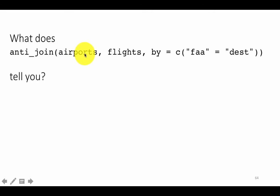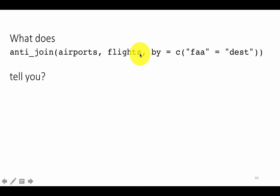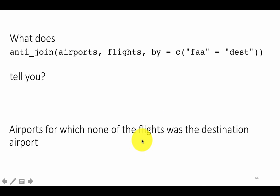How about the other way: anti_join(airports, flights, by = c(faa = 'dest'))? By the same argument, this tells us which airports were not destinations in the flights table — airports that exist in the airports table but no flights were going to those airports. So the earlier one found flights whose destinations didn't exist in the airports table; this one finds airports that actually exist but had no flights destined for them.